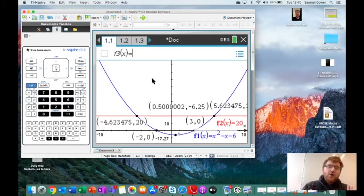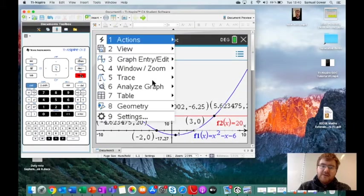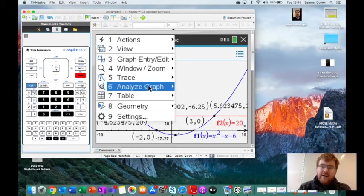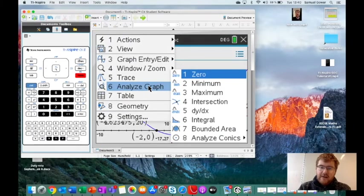Those are the key functions on your GDC: knowing your Zoom Fit on the graph, knowing how to find intersection points, knowing how to find minimum points and maximum points in the same way, and finding the roots of the equation. Most of these options that you need you'll find in this section here. Now there is another button I would like to highlight before I finish, and that is the button Trace.